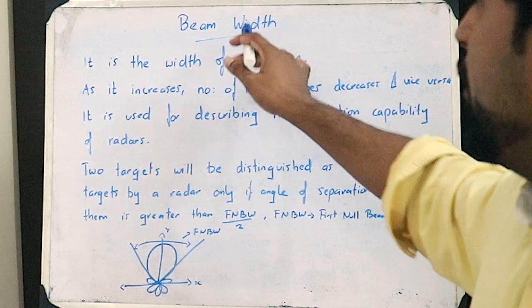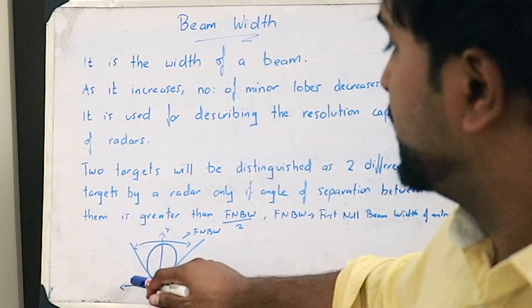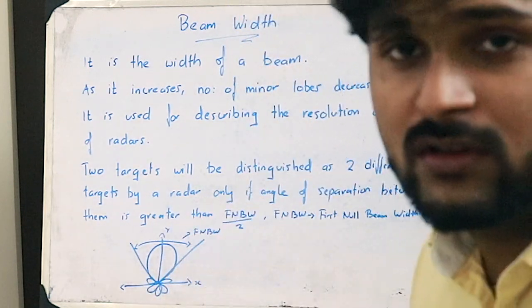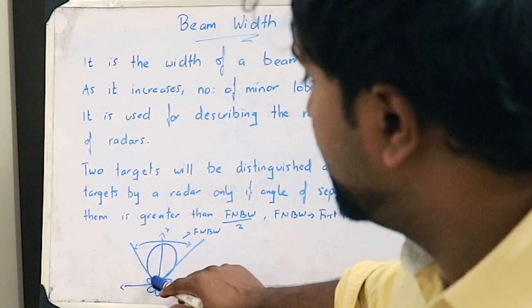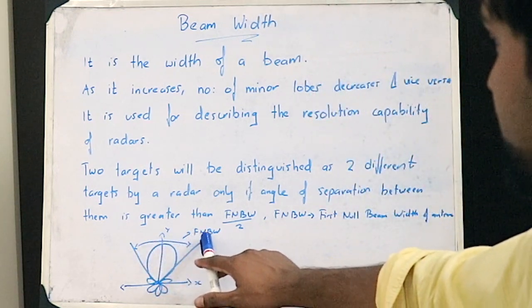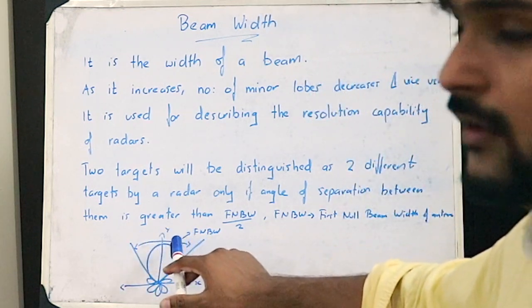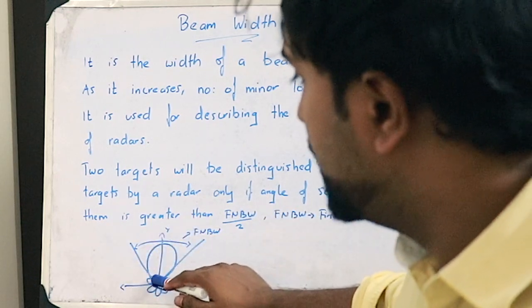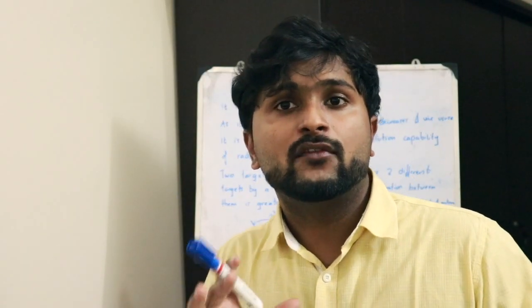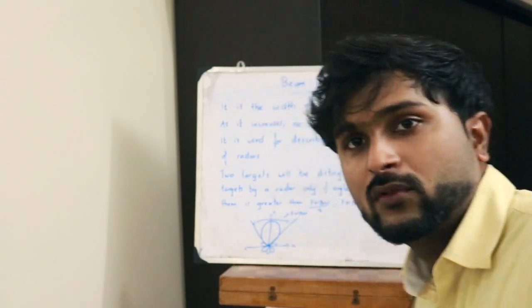That is simply the concept of beam width. As you can see, if this is the direction of propagation of a particular antenna, it will have a main lobe in this direction along with a number of side lobes. This region shown is the first null beam width of this antenna. As the beam width increases, the major lobe also increases and therefore the number of side lobes decreases. I hope you understood, and if you have any doubts please comment below. We'll be discussing more about this topic in upcoming videos. Thank you.